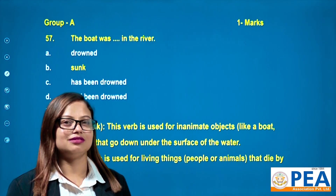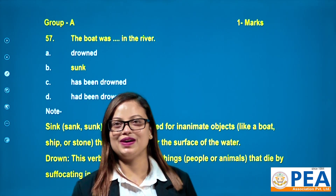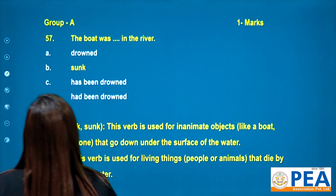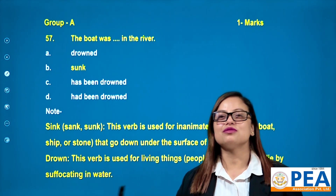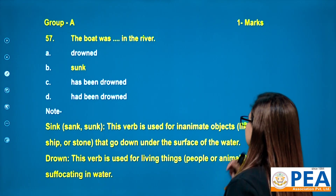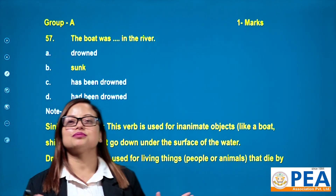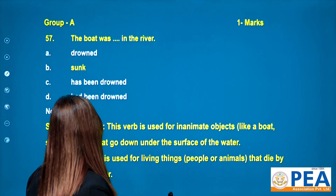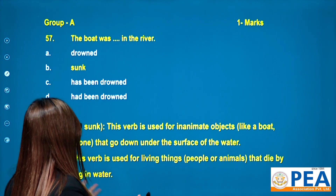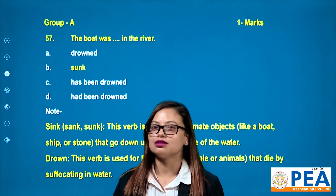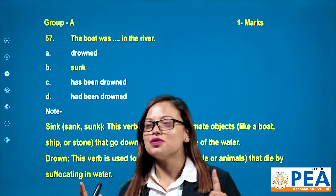Question number 57: 'The boat was ___ in the river.' Options are drowned, sunk, has been drowned, had been drowned. The verb 'sink/sank/sunk' is used for inanimate objects like a boat, ship, or stone that go down under the surface of water. 'Drown' is used for living things — people or animals that die by suffocating in water. Since the subject is 'boat', the correct answer is 'sunk'.